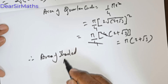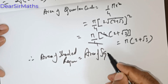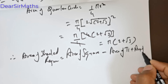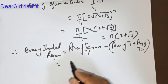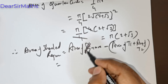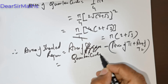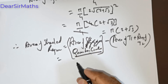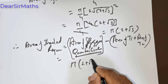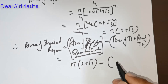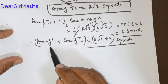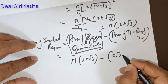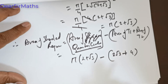Therefore, area of shaded region equals area of quarter circle minus area of T1 plus T2. Area of quarter circle is π(2 + √3). Area of T1 plus T2 is 2√3 plus 4, which equals 2(√3 + 2). So shaded area equals π(2 + √3) minus 2(√3 + 2).